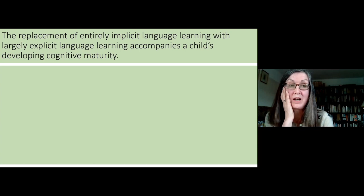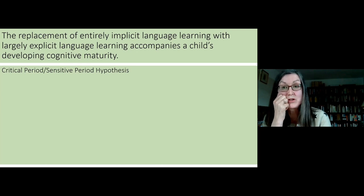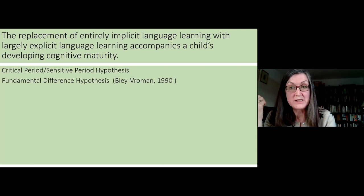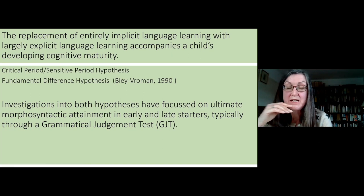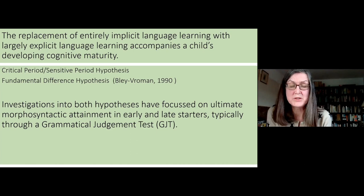They're in receipt of corrective feedback where language is described using metalinguistic terms, and they can engage in deliberate memorizing and application of rules. This gradual replacement of an entirely implicit language learning experience with a largely explicit one accompanies an individual's developing cognitive maturity as they move out of childhood. There's been a lot of talk and publications on critical periods or sensitive periods. And of course there's the Fundamental Difference Hypothesis put forward by Bley-Romand in 1990, which says there is a fundamental difference between children learning language and adults learning language. Investigations into both these hypotheses are generally focused on morphosyntax.